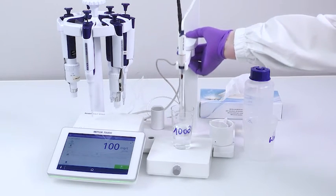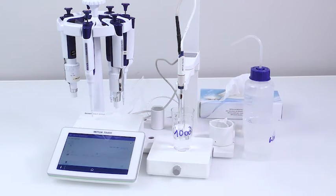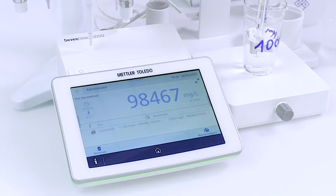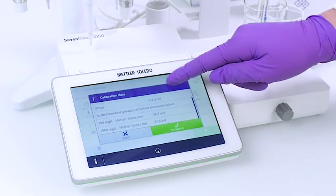For sodium, the pH must be high, around 8 to 10, which you could achieve by using a solution of ammonia and ammonium chloride. Let's check the slope of the curve which is 98 percent. This ensures that your sensor is in excellent condition.